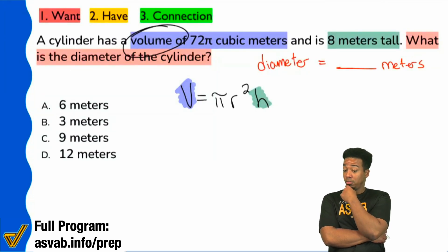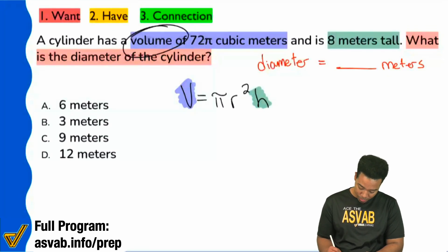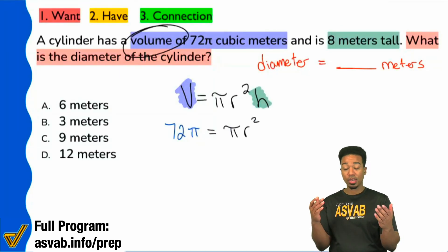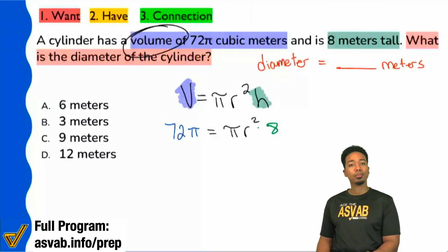72? Are you sure? 72π. That's what you're given. So we have ourselves 72π right there. And then we have πr squared. And then what are we given for the height? That's right, we're given 8 for the height. So we'll write that out right there.